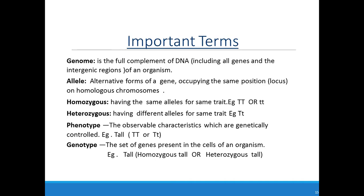Phenotype refers to the observable characters which are genetically controlled. Whatever visible characters are there are related to phenotype. If any capital letter is present, it represents the dominant character — for example, TT or Tt will show a tall phenotype due to the presence of capital T. Genotype is the set of genes present in the cell. For a tall plant, the genotype TT represents homozygous tall, and Tt represents heterozygous tall.